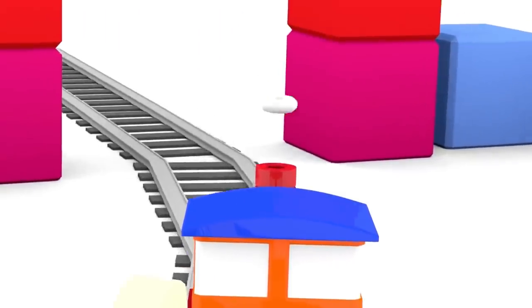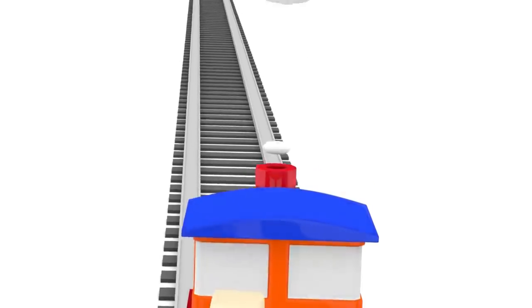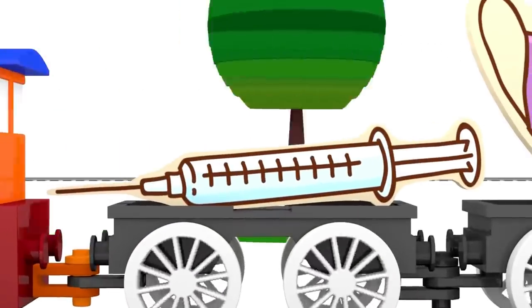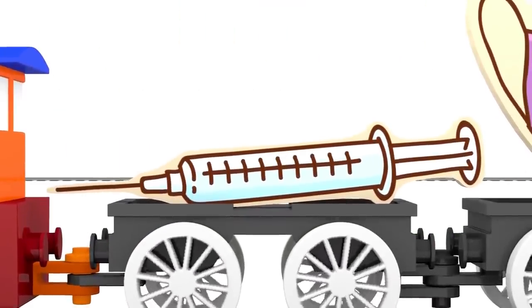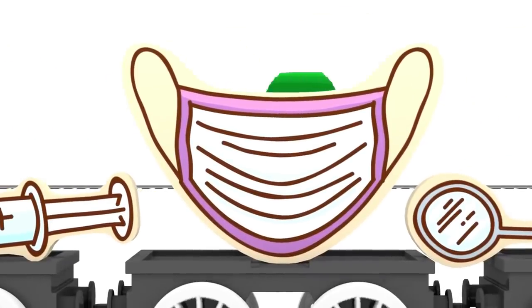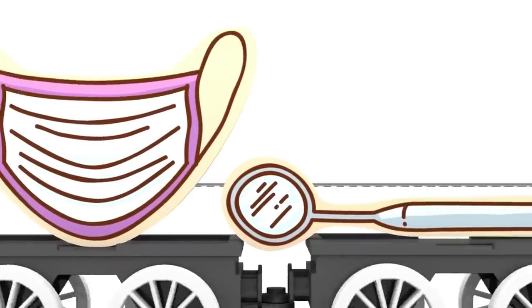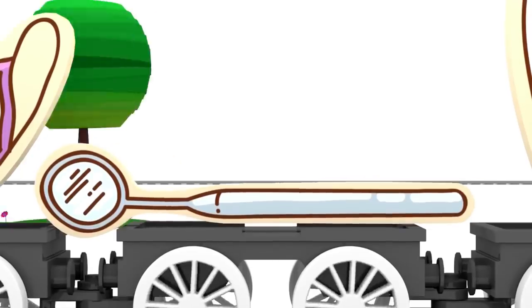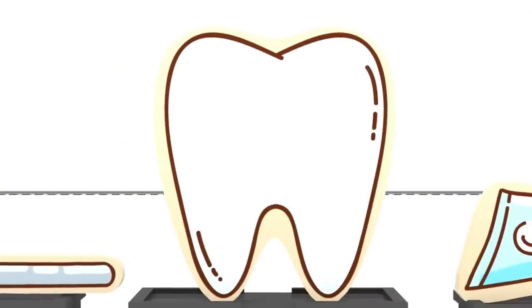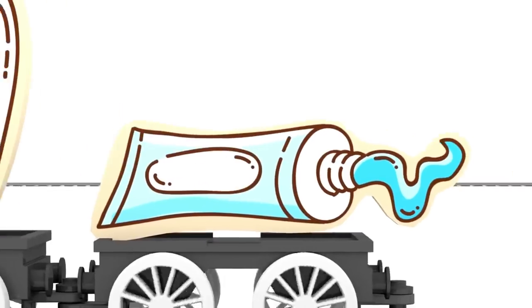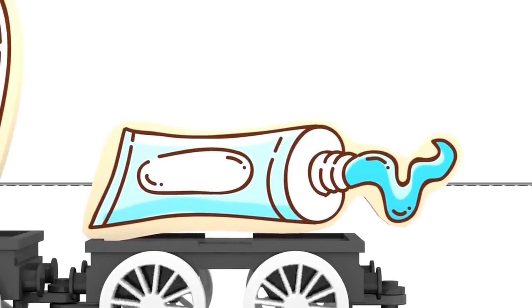What is it carrying in its wagons? Let's see. That's a hypodermic syringe, a mouth mask, a dental mirror, a tooth, and a tube of toothpaste.